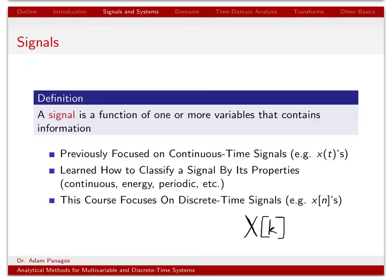That's very different from the variable t that we've used previously, because t can take on a continuum of values — it can take on the value 1.0, 1.00001, or anywhere in between. That's why they are called continuous time signals — the signal has a value for any value of t on the real line. Whereas the discrete time signals we study in this class are only defined for integer values of time.